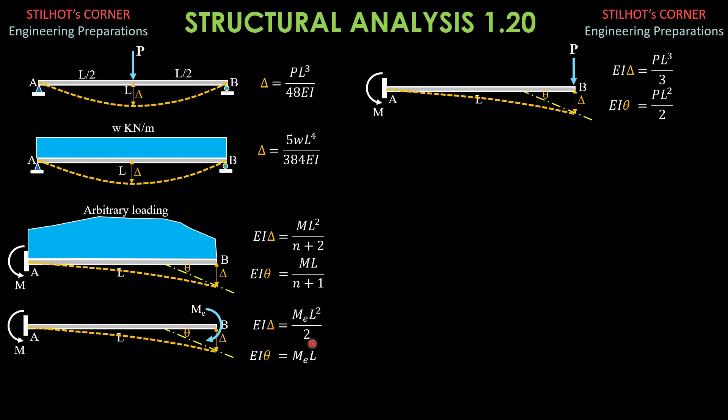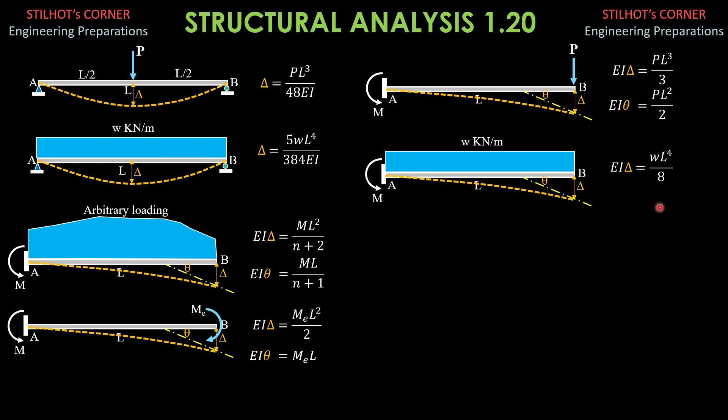Then, for this case here, the moment at the wall is W times L times L over 2, so WL squared over 2. And the degree is 2. So EI delta equals WL to the 4th over 2 times L squared. EI delta equals WL to the 4th over 8. Then, EI delta equals WL squared over 2 times L, so WL cubed over 2 plus 1. 2 times 2 plus 1 is 3, 2 times 3 is 6. So EI theta is WL cubed over 6.